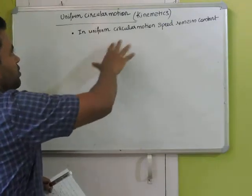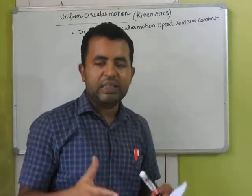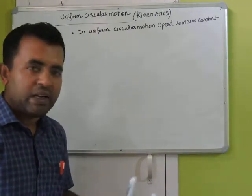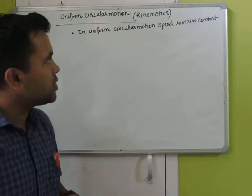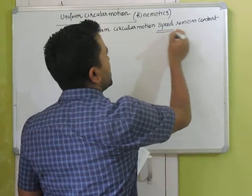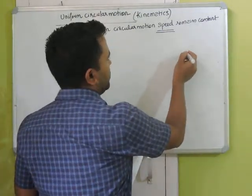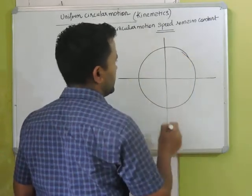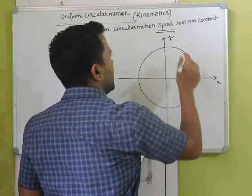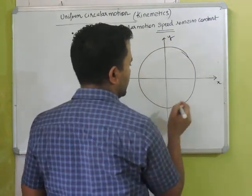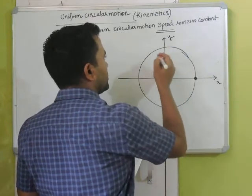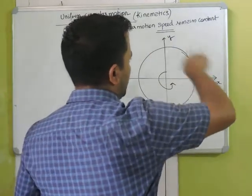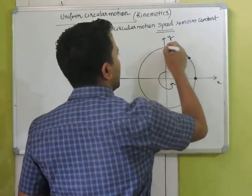In physics, uniform circular motion is very interesting and deep because it involves the concept of vectors and the concept of differentiation. The keyword is speed remains constant in uniform circular motion. Let us say we have a particle going in a circle with x-axis and y-axis set up, and the thing is rotating anti-clockwise.